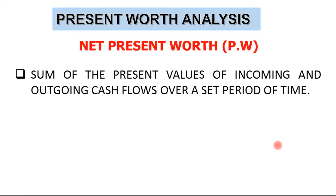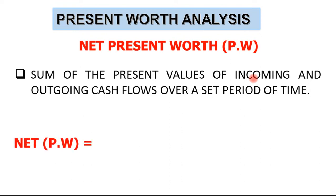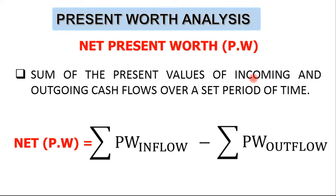The net present worth is the sum of the present values of incoming and outgoing cash flows over a set period of time. Incoming cash flows are revenues or gains of the company — examples include the salvage value and the income per year. Outgoing cash flows are the expenses, such as the initial cost, the operation cost, and the upgrading cost. The net present worth is calculated by subtracting the present worth of all outflows from the present worth of all inflows.